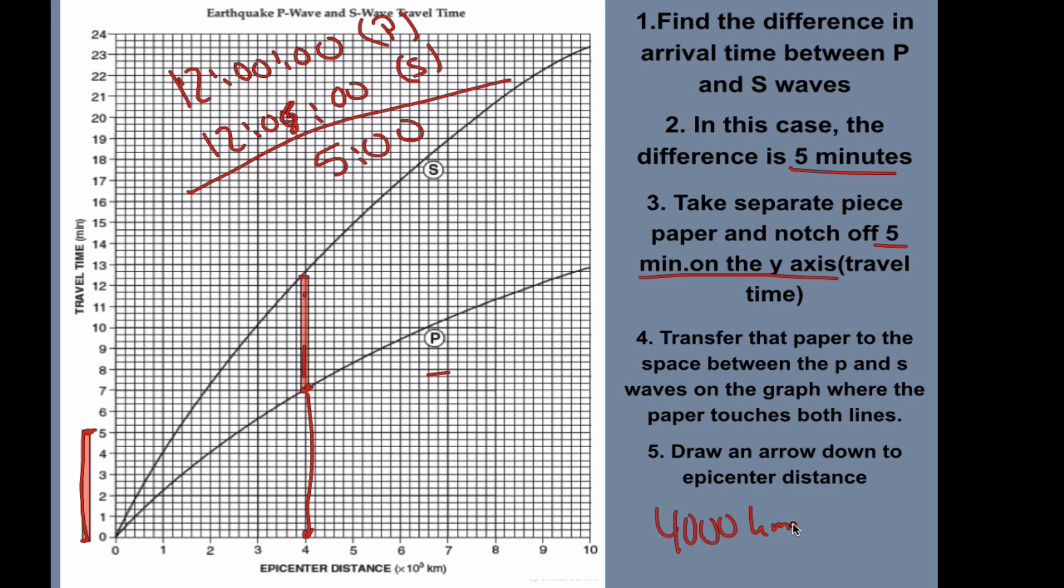Depending on how precise you are with this, you may get a little bit different answer than someone else. You may get 3,800, 3,900, 4,100. It's okay to be a little bit different than the next person, but you need to be consistent with your steps. So in that case, we're 4,000 kilometers away with a five-minute difference between the travel times.